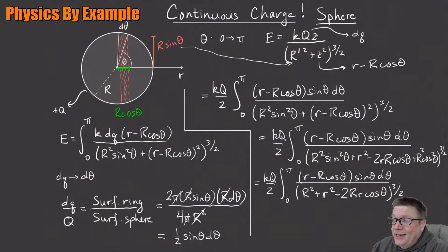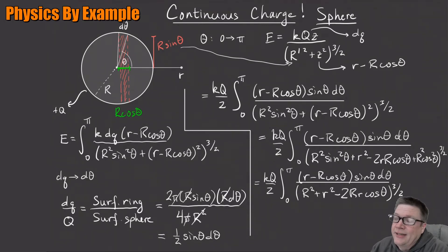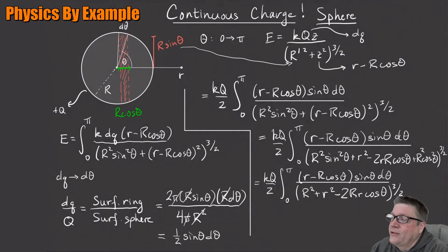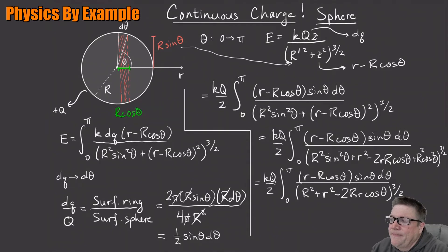We've simplified it a bit, and now it might be in a standard form. We have cosine theta in the denominator and sine theta on top, which suggests a u-substitution: let u equal cos(theta), so du equals minus sin(theta) d-theta. The cosine terms become u and the sine theta d-theta becomes our du.